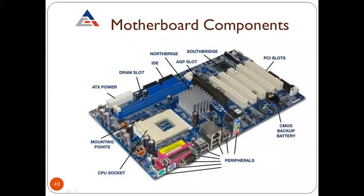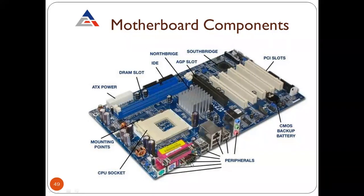To summarize the components on the motherboard diagram: we have PCI slots, south bridge, north bridge, AGP slots, IDE, DRAM slots (dynamic memory slots), ATX power, mounting points, and CPU socket. The peripheral connectors — input/output devices — allow us to attach pen drives, keyboard, mouse, LAN cables, and there is also the CMOS cell.